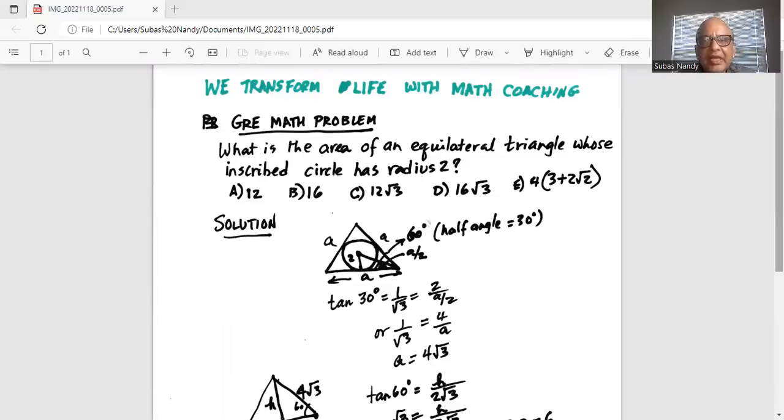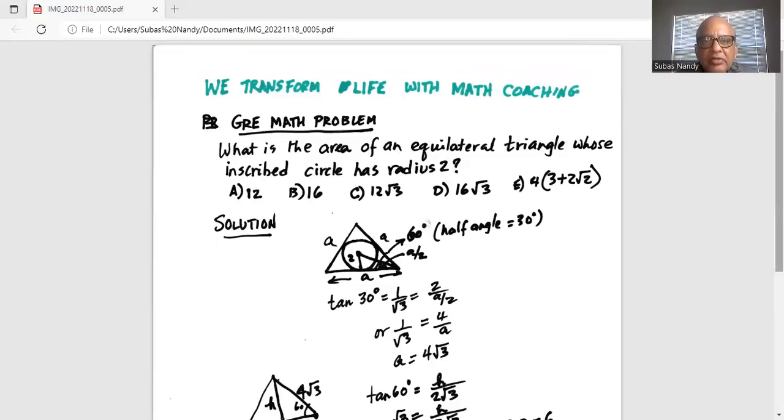What is the area of an equilateral triangle whose inscribed circle has radius two? So I show you the picture of an equilateral triangle, each side is equal to a, and inscribed inside it is a circle whose radius is two.